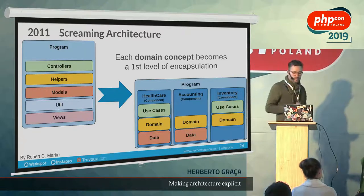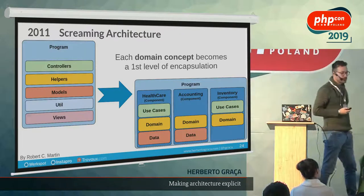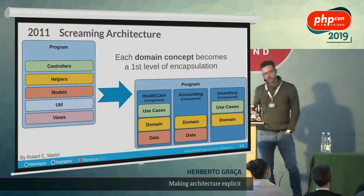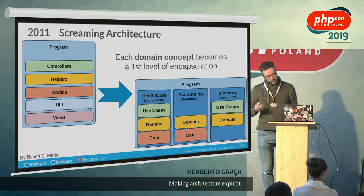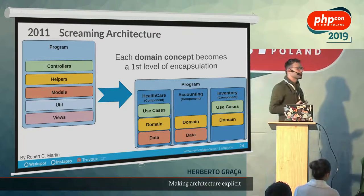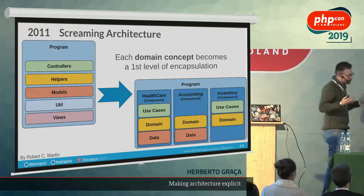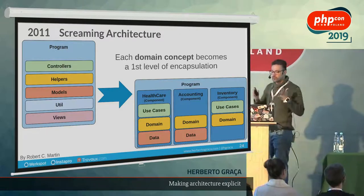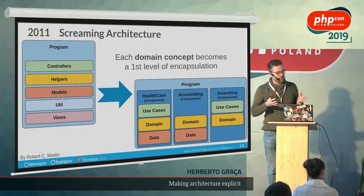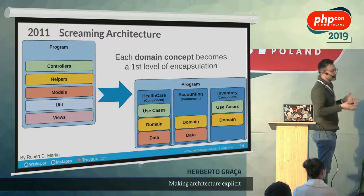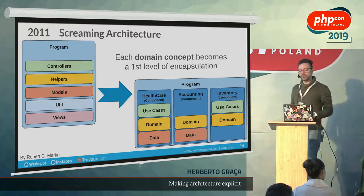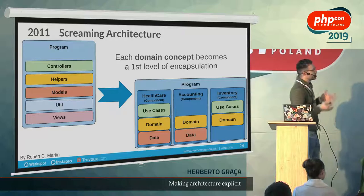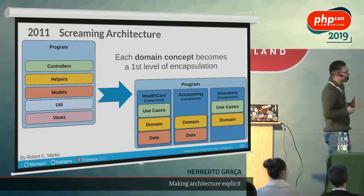In 2011, Uncle Bob came back and said we need to think about architecture differently — the project should scream what it does. We usually organize controllers in one folder and helpers in another. Instead, we should group code by context: a healthcare component with everything related to healthcare, a billing component with everything related to billing, and so on. This is again encapsulation and modularity.